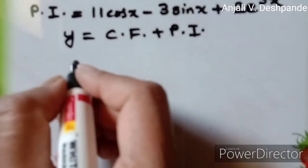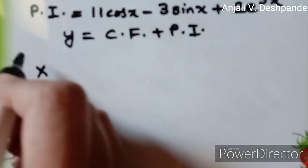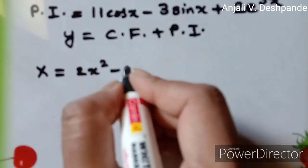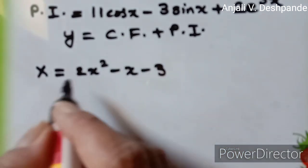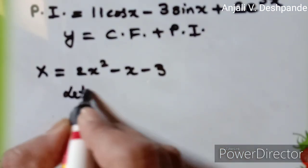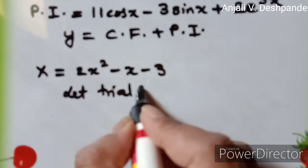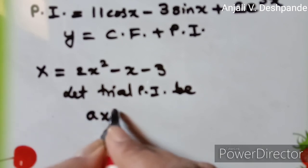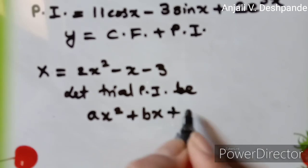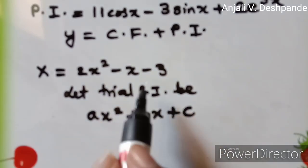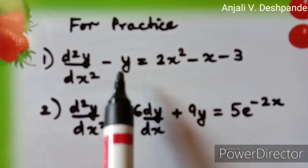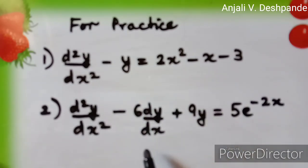Likewise, supposing in the RHS you have got some function like a polynomial of the form 2x² minus x minus 3, then in that case you let the trial PI be a polynomial, written as ax² plus bx plus c. Then once again, you will differentiate, substitute, equate the like coefficients, and find the value of the PI. For practice, you can try to solve these two sums by making use of the method of undetermined coefficients.